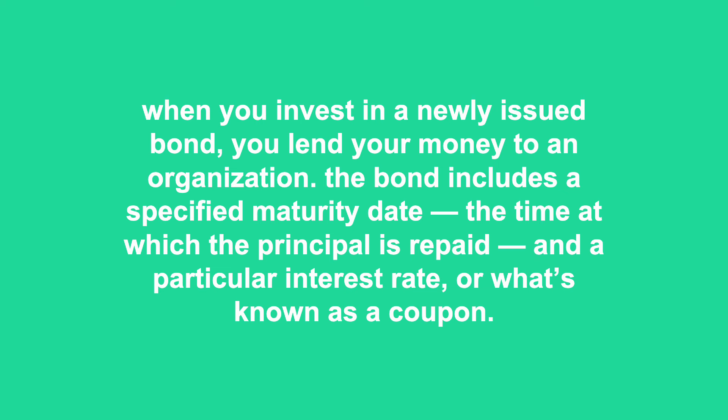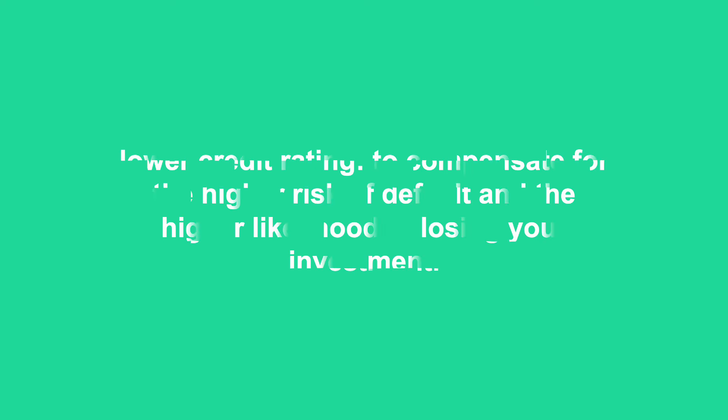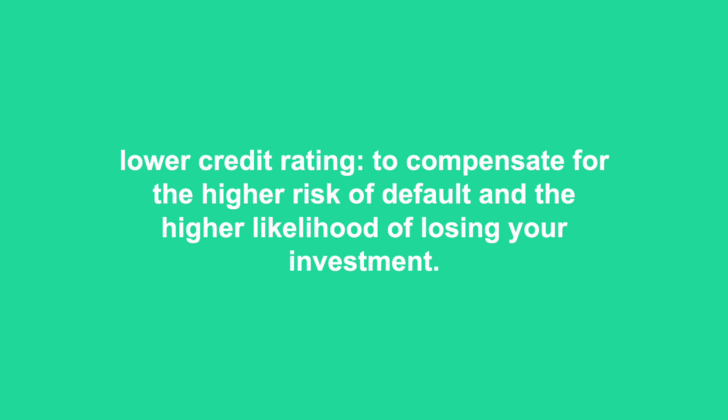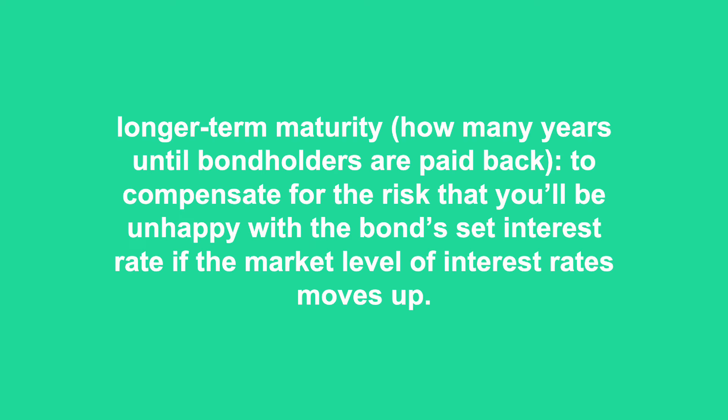This rate is fixed on most bonds. For example, if you buy a 10-year, 5% bond issued by Boeing, the aircraft manufacturer, you're lending your money to Boeing for 10 years at an interest rate of 5% per year. Bond interest is usually paid in two equal semi-annual installments. Some types of bonds have higher yields than others, but the risk-reward relationship remains intact. A bond generally pays you a higher rate of interest when it has a lower credit rating, to compensate for the higher risk of default, or longer-term maturity, to compensate for the risk that you'll be unhappy with the bond's set interest rate if market rates move up.